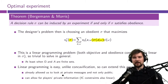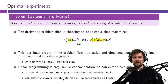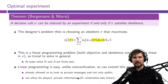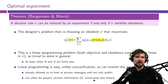This approach easily extends to private persuasion and can even extend to players having private information before participating in the experiment. You can look at the Bergemann-Morris survey for more details. The idea is that if you add IC constraints for players to be willing to report their true private information before being recommended an action, those IC constraints are also linear.